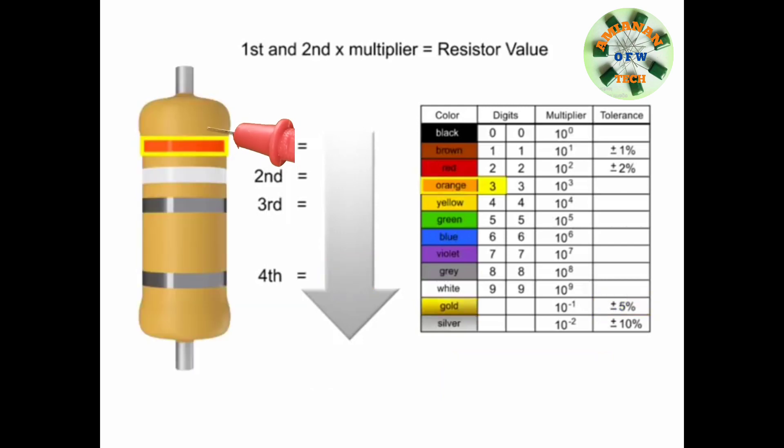In this example, the first band is orange, so the first digit is 3. The second band is white, so digit 2 is 9. The third band is silver, so we multiply the first two numbers by 10 to the negative second power, or 0.01.